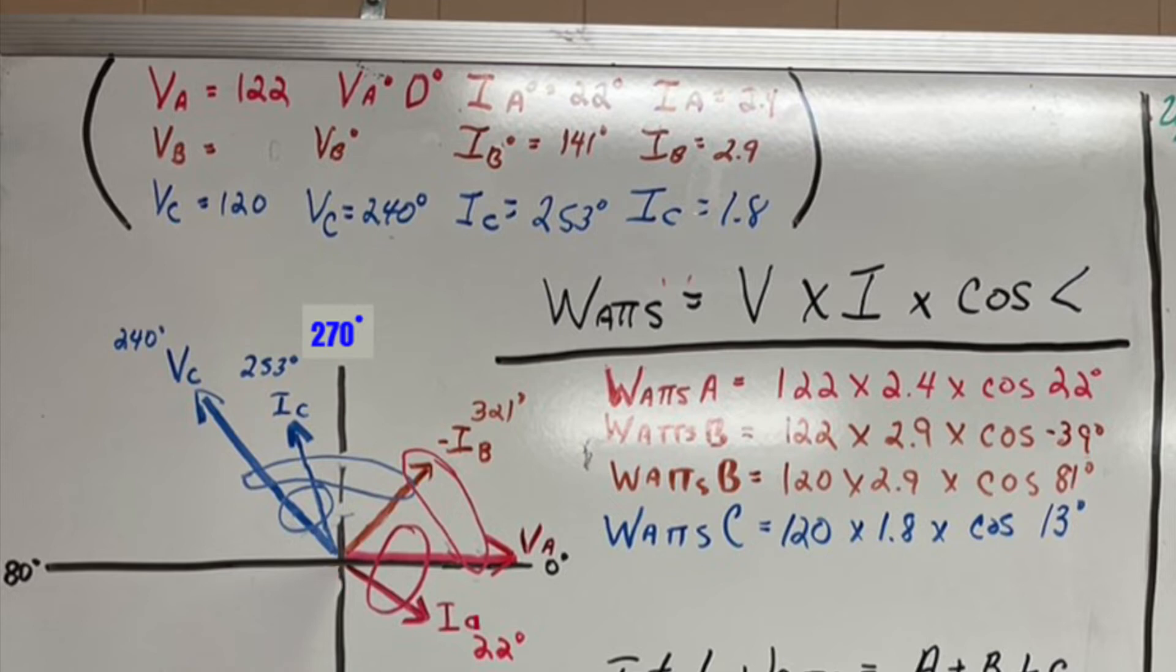So now we have B figured out. Now we're going to go ahead and do C phase. C phase is simple because you're just going to do the voltage and the current and make a little circle between the voltage C and IC. And here we have 120 volts times 1.8 times the cosine of 13 degrees.